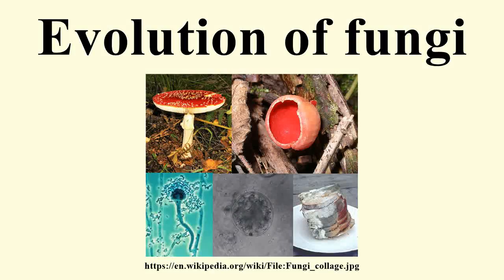The evolution of fungi has been going on since fungi diverged from other life around 1,500 million years ago, with the glomalions branching from the higher fungi at approximately 570 million years ago. According to DNA analysis, fungi probably colonized the land during the Cambrian, over 500 million years ago. But terrestrial fossils only become uncontroversial and common during the Devonian, 400 million years ago.